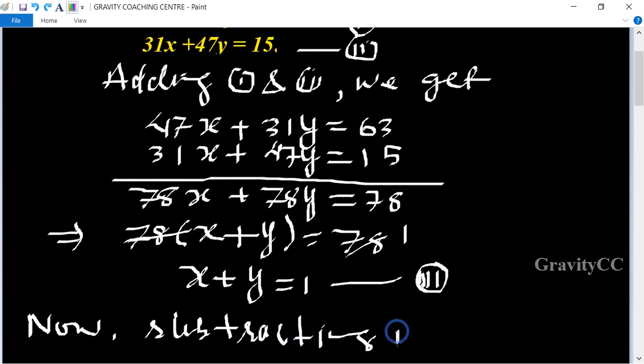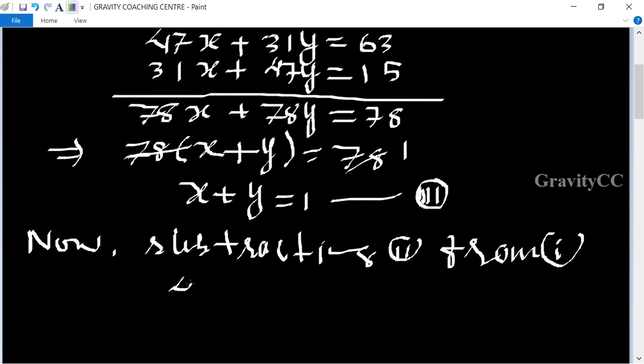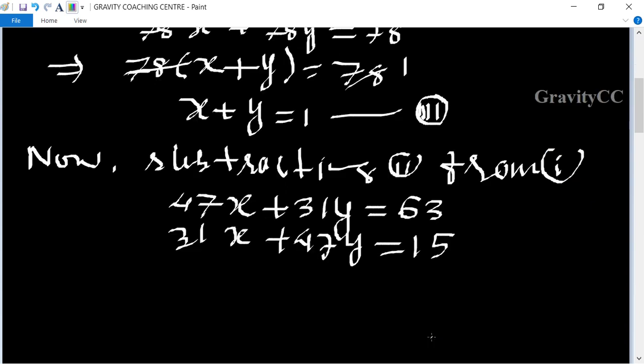Now subtracting equation 2 from 1. We get 47x plus 31y equals 63 and 31x plus 47y equals 15. Using the minus sign, after subtracting we get 16x minus 16y.